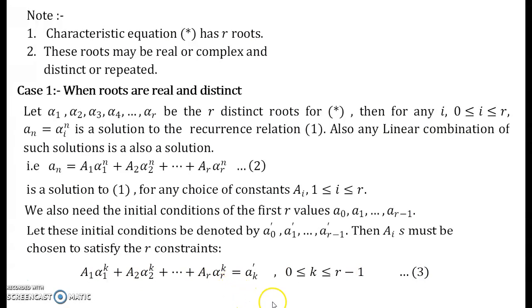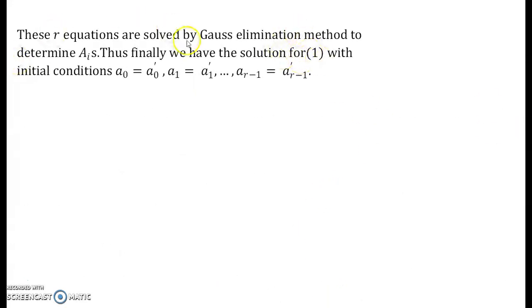These r equations can be solved using Gaussian elimination method and then we can determine A₁. Now what is Gaussian elimination method, you need not get scared of it. When there are only two equations it is nothing but our simultaneous equations. And when there are three equations we know how to solve them by matrices and using row transformation and column transformation, and finally that is nothing but our Gaussian elimination method.